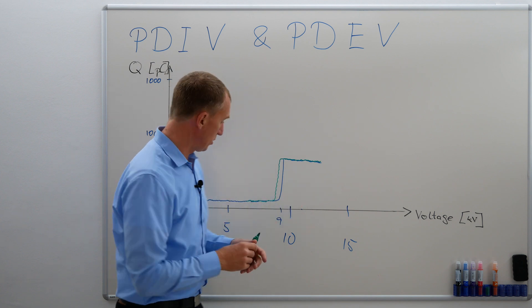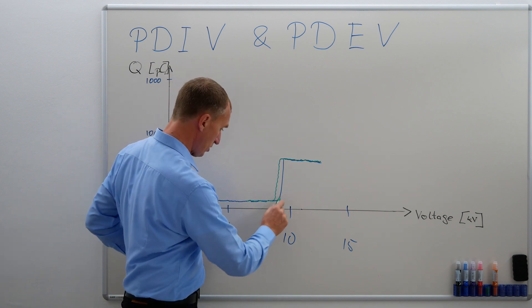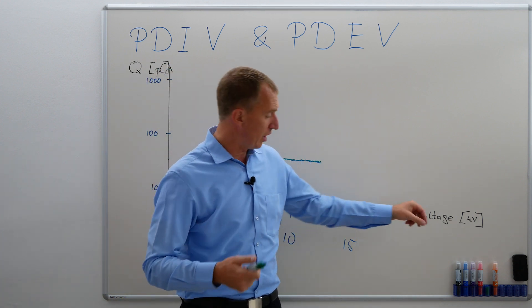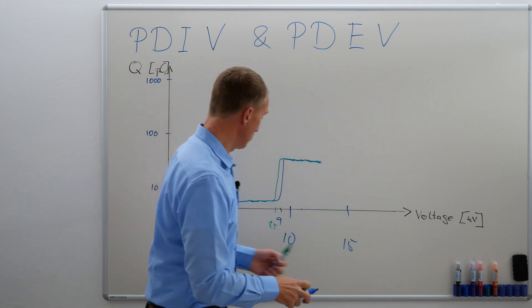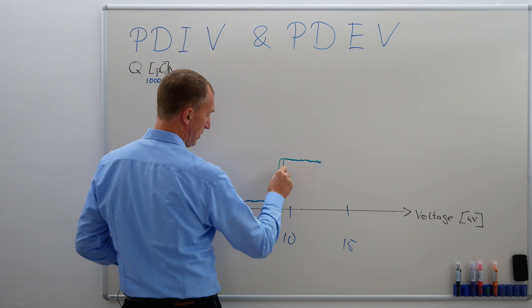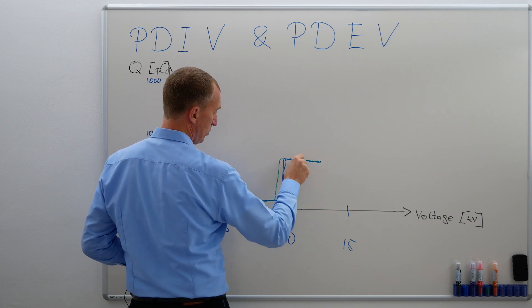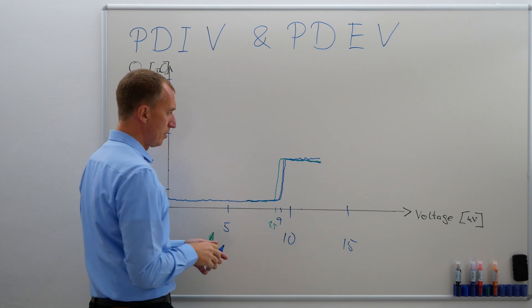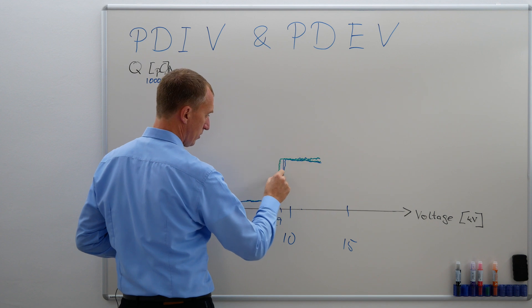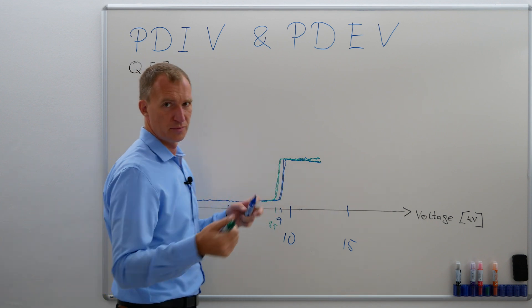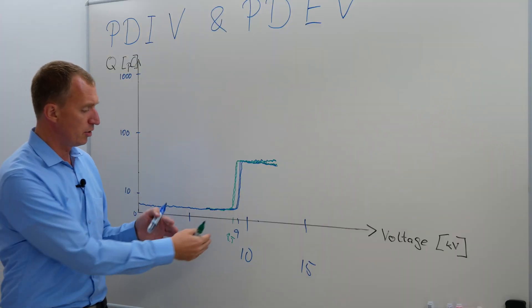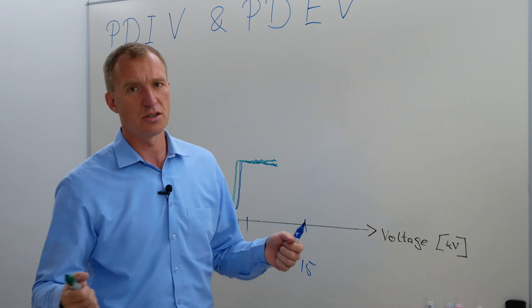Once I've determined my inception voltage and my extinction voltage — let's say 8.5 kV — I wouldn't rely on just one measurement. I'd probably do three repetitions. I go up, get a slightly different value each time, sometimes a little higher. Then I go back down. Do this three times, take the mean — that's pretty much it. That's how you determine your inception voltage and extinction voltage.